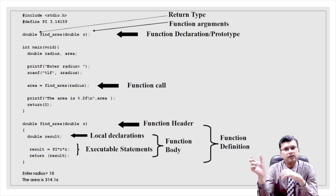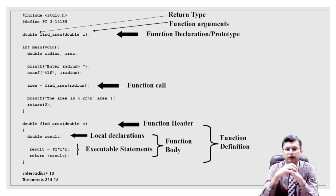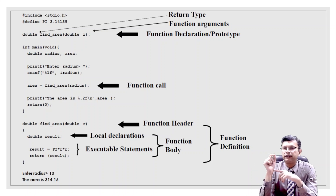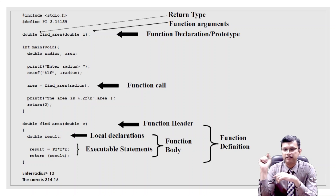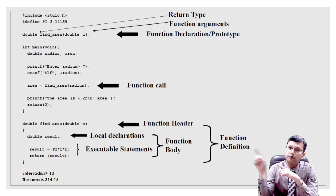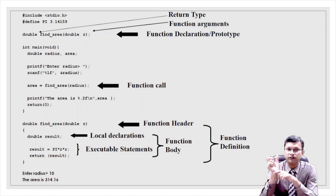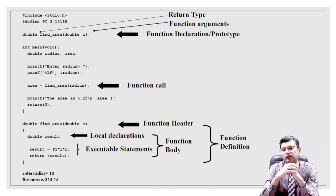When the function is called, execution passes to the function defined below: `double findArea(double r)`. The radius value passed is assigned to the variable `r`, calculations are done using a local variable `result`, and finally the result is returned back to where it was called — the main function — where it is assigned to the variable `area`.